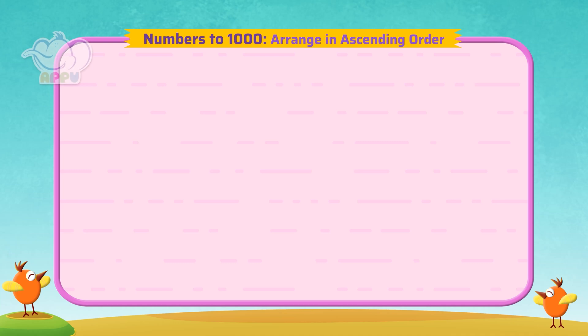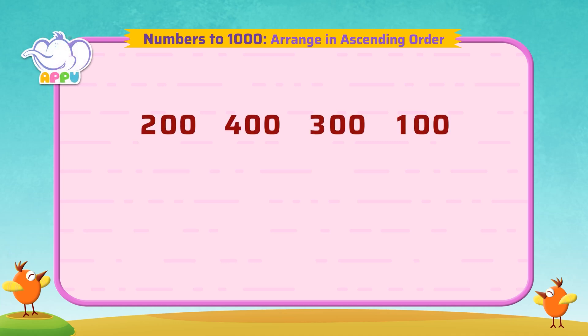Arrange these numbers in ascending order: 200, 400, 300, 100.